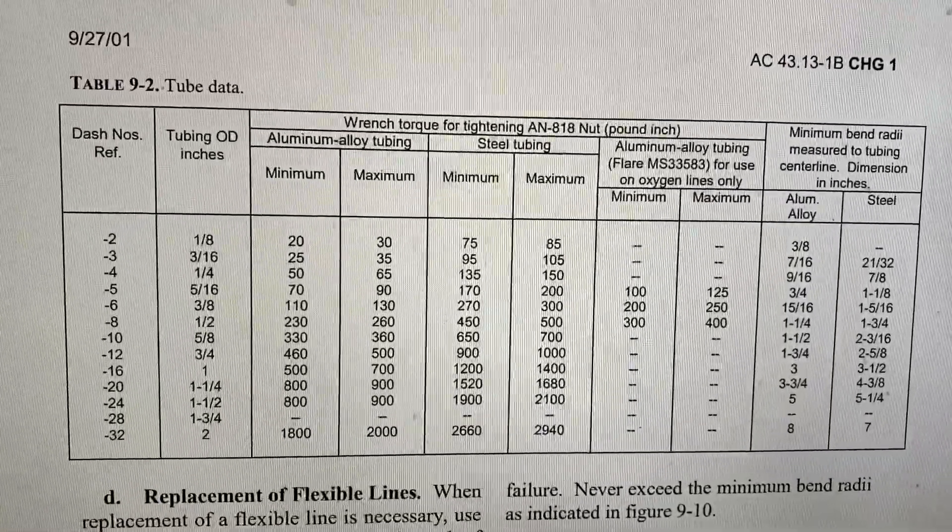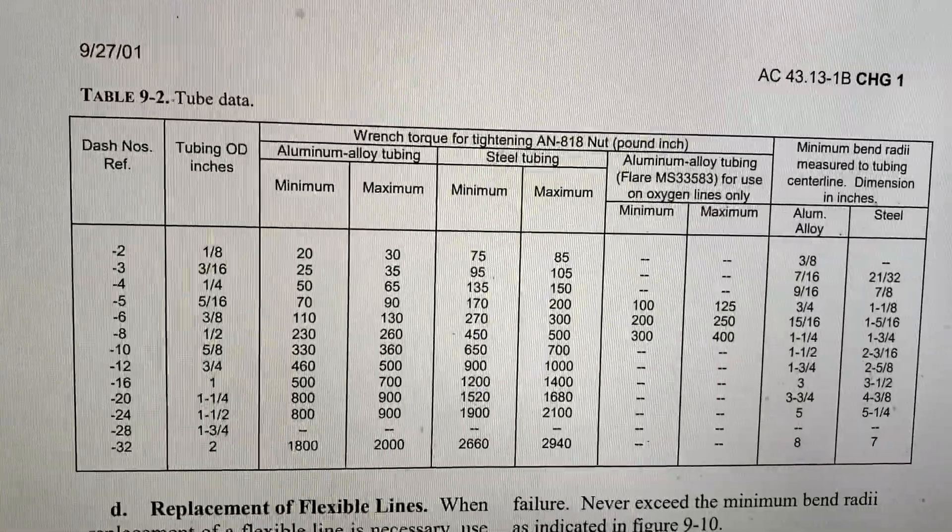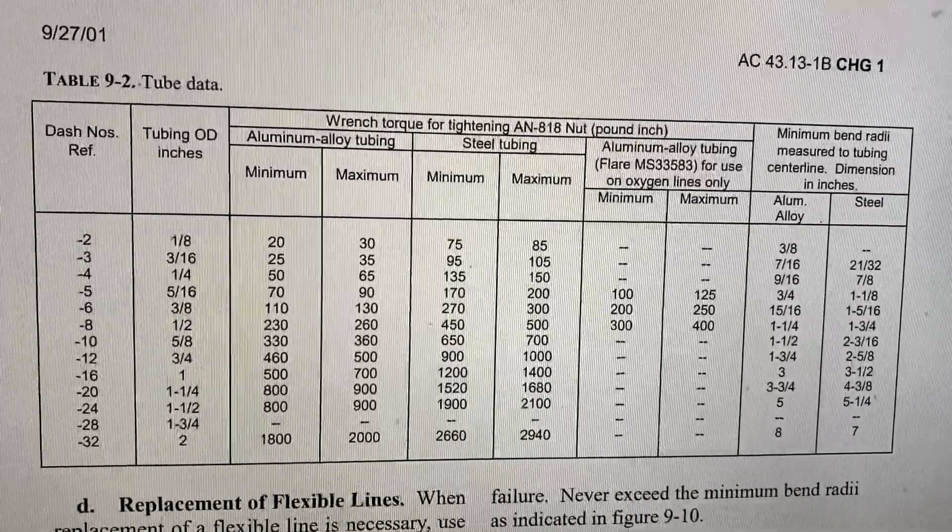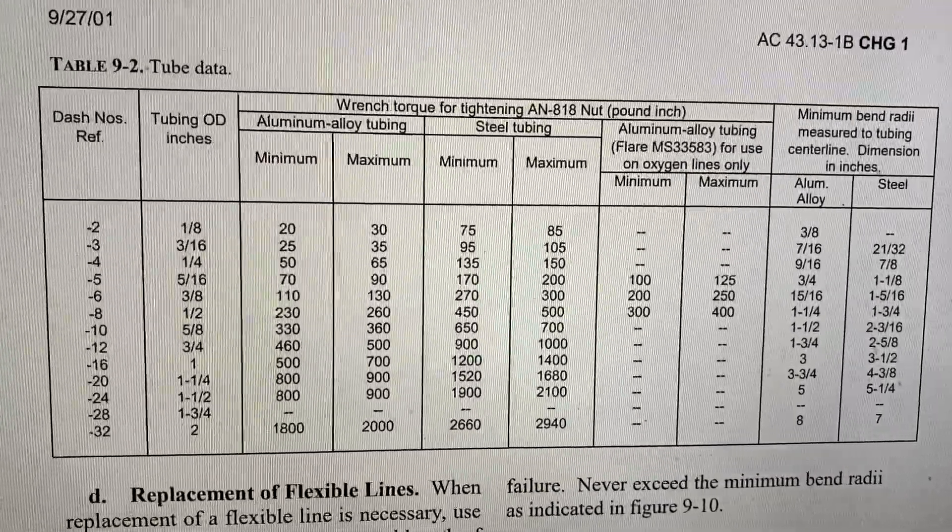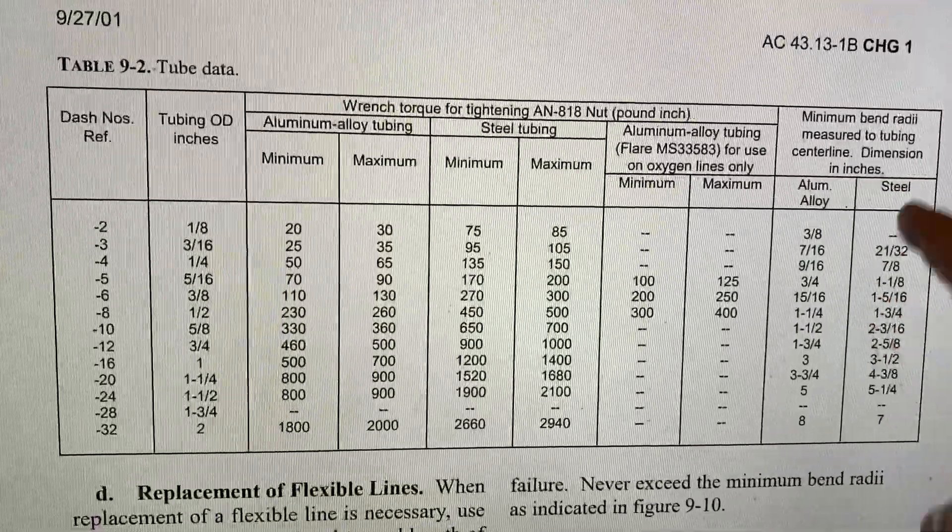Okay, so hopefully you watched my earlier video on how to read this chart and how to do torque calculations from this chart. So what I wanted to do right now is to teach you the final column on this chart, and that is the minimum bend radius column.